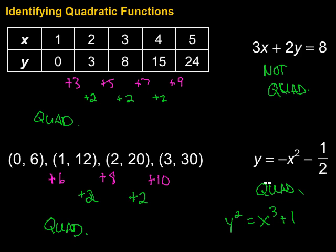So identifying quadratic functions: if we're given a table of values or a set of ordered pairs, we look at the second differences. Make sure the x values have a constant difference, then look at the y values — we have to have a constant second difference. Find the first differences, shown here in pink, and then find the second differences. In both cases they were the same, so they were both quadratic functions. It doesn't always have to be plus 2 — it could be plus 3, plus 10, all sorts of options. If we're given an equation, look for x squared as the largest exponent, and if we have that, we've got a quadratic.